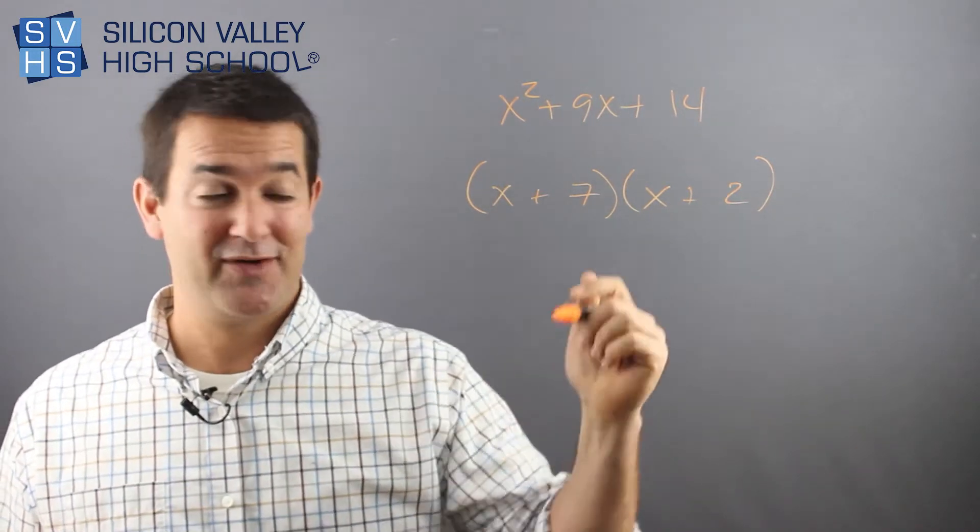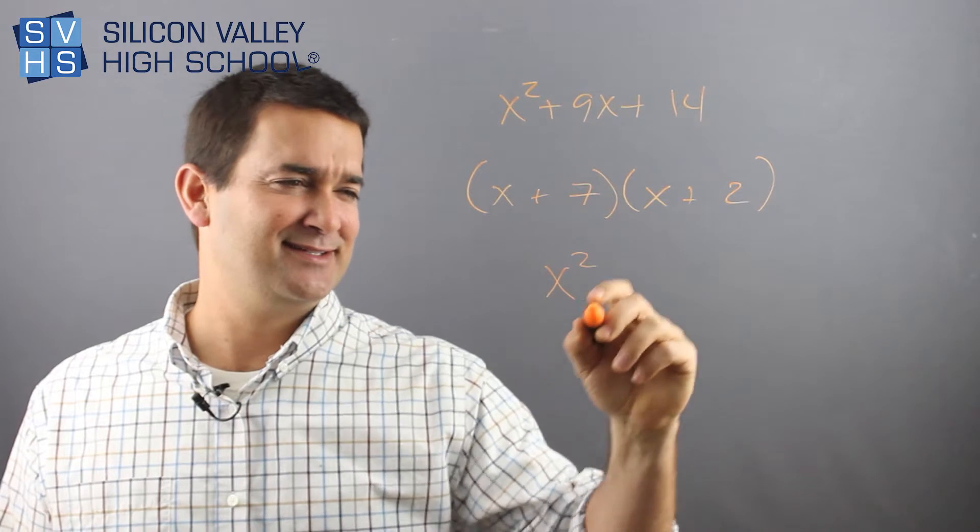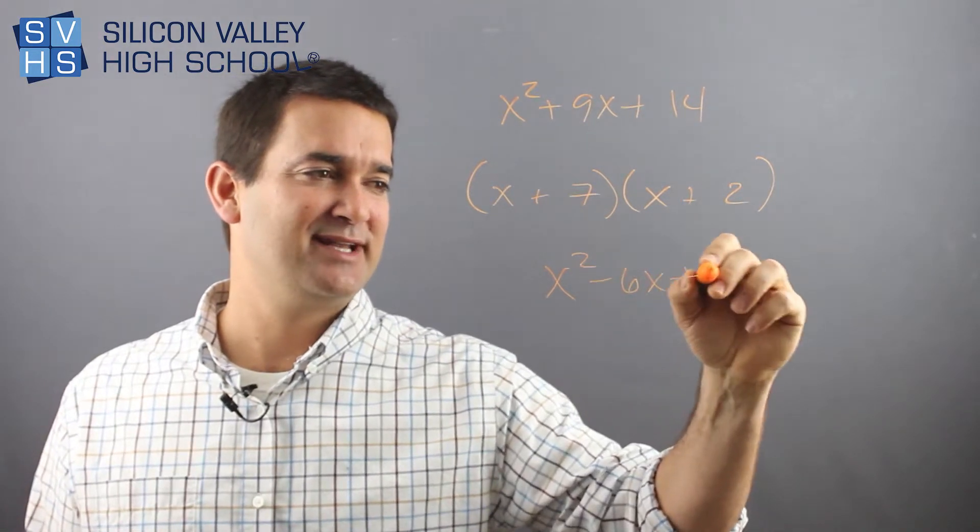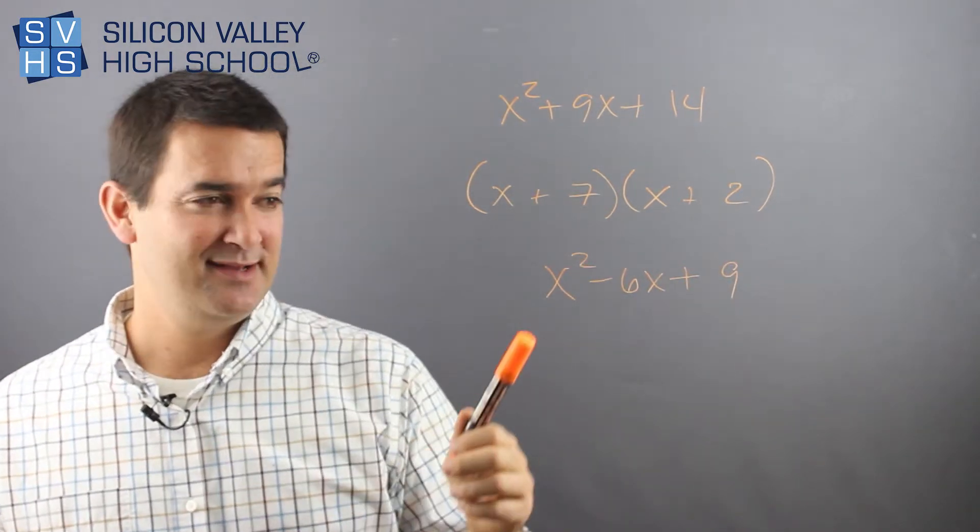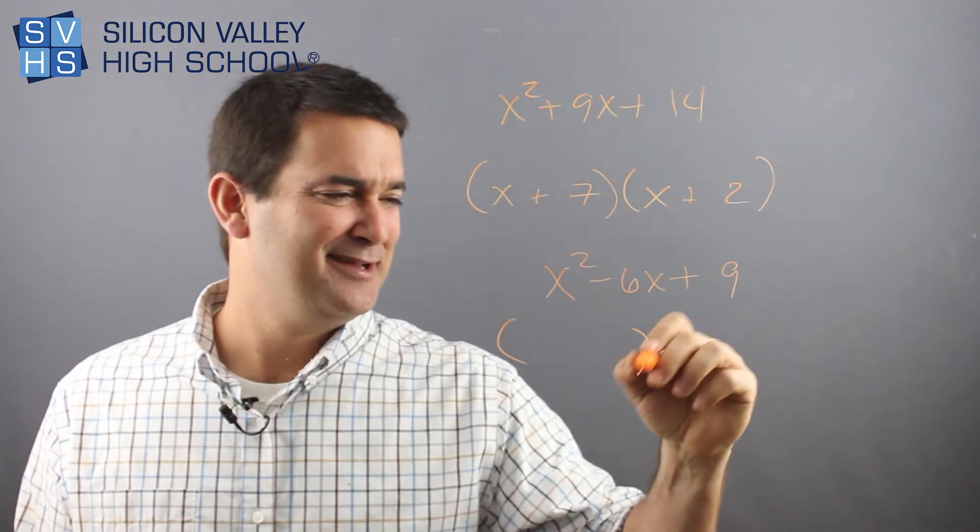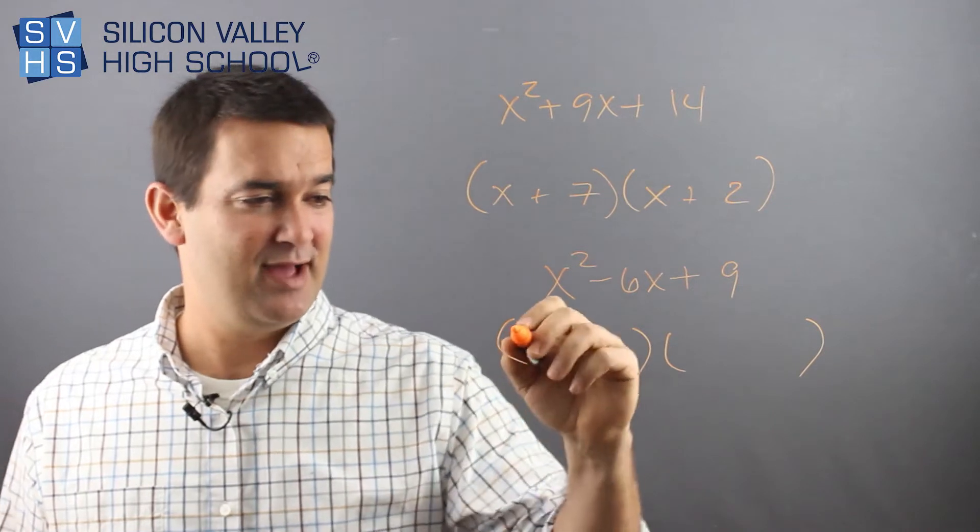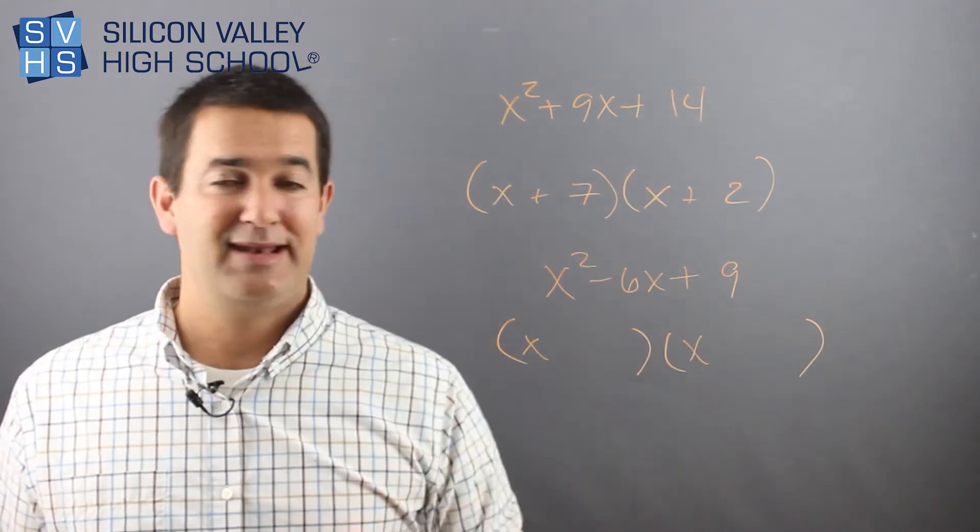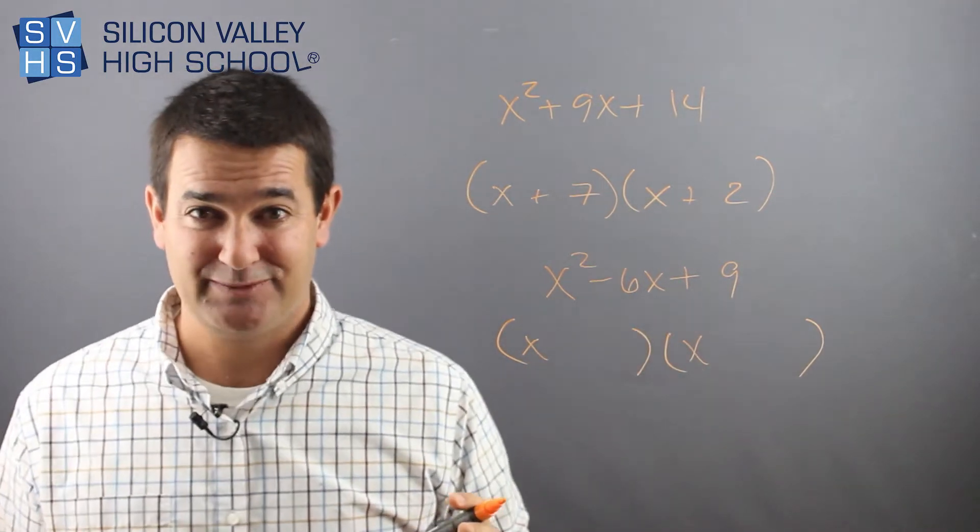I lied. I'm going to do one more. This one's going to be super exciting. Let's do x² - 6x + 9. That's pretty trippy. Here I have a minus and plus. Oh no, I'm not sure what to do. Same thing - no coefficient, so x and x. Don't even think. Now pause. This requires some deep thought.